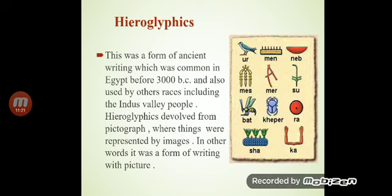Hieroglyphics: hieroglyphics is a writing style. This was a form of ancient writing which was common in Egypt before 3000 BC, and also used by other areas including the Indus Valley people. Hieroglyphics developed from pictographs, where things were represented by images.